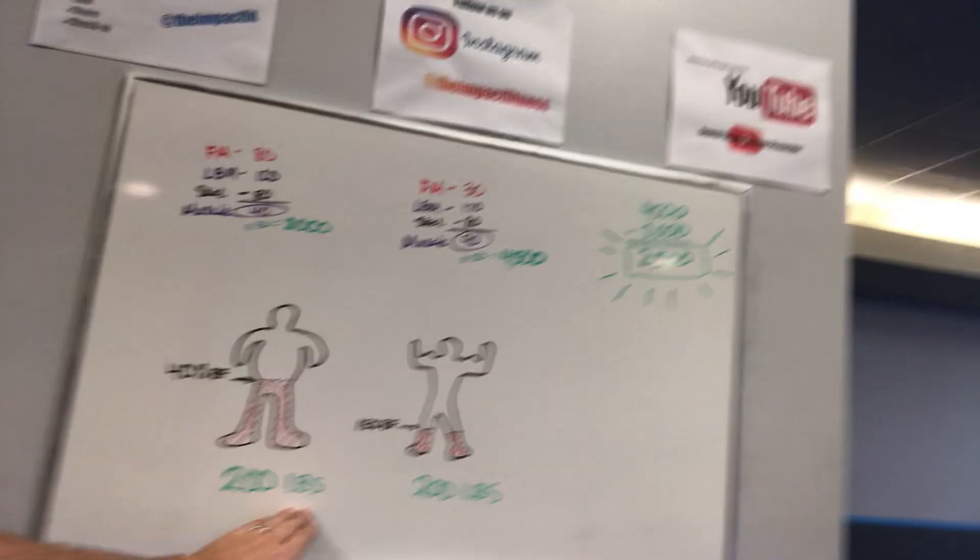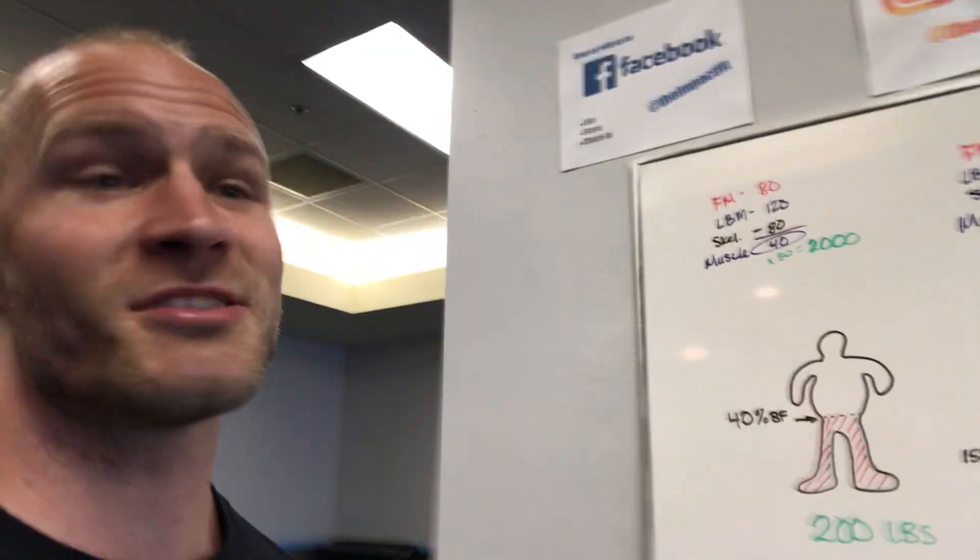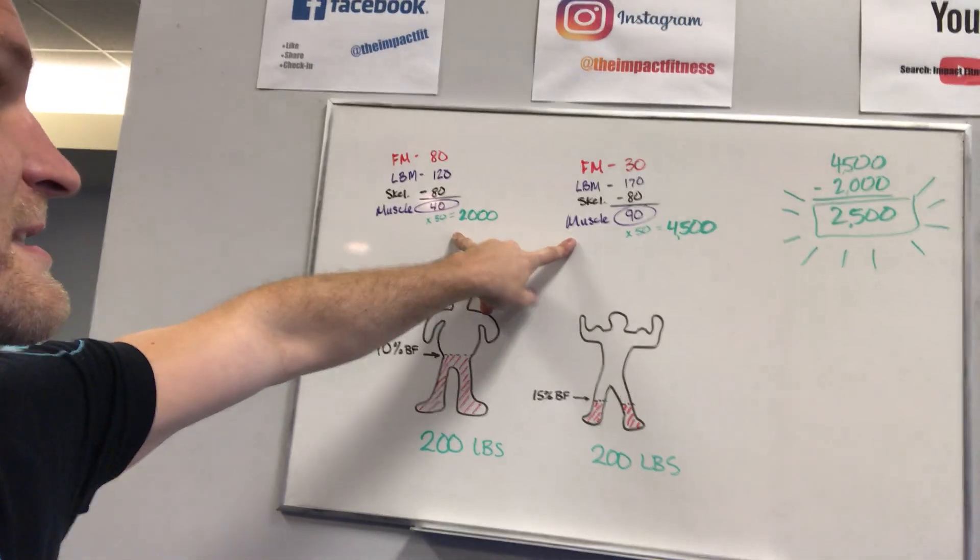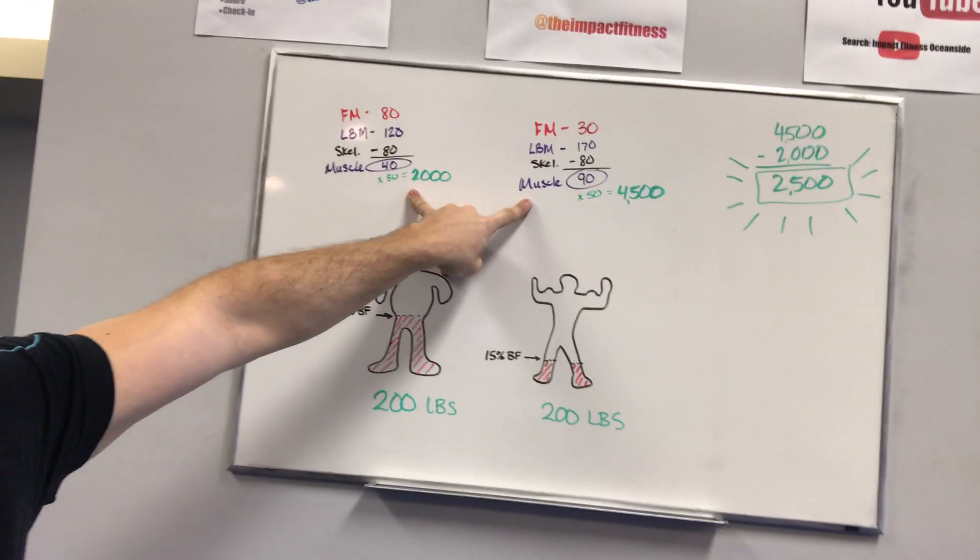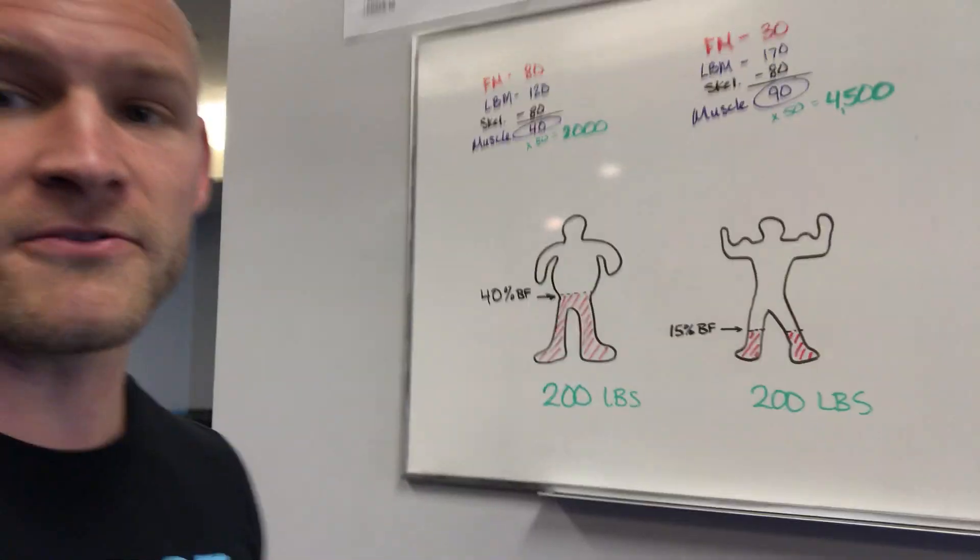So, the math just goes to show it's not about the number on the scale. The weight does not matter. What matters is the lean muscle mass. It's that muscle number that's circled right here in purple. That's the number that matters. So, we wanna increase muscle mass and decrease body fat.